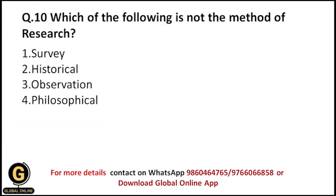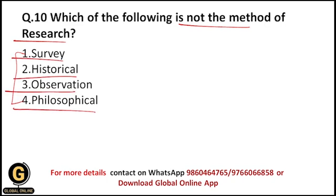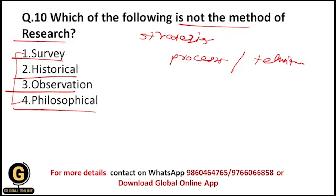Which of the following is not a method of research? The options are survey, historical, observation, and philosophical. A research method comprises strategies, processes, or techniques utilized to collect data or evidence to reveal new information or create better understanding of a topic. Survey, historical, and observation are all methods of research, but philosophical is not a method of research. Therefore the correct answer is philosophical.